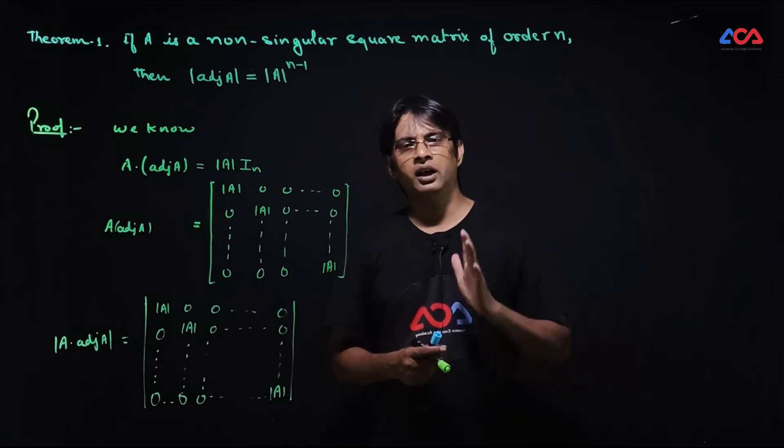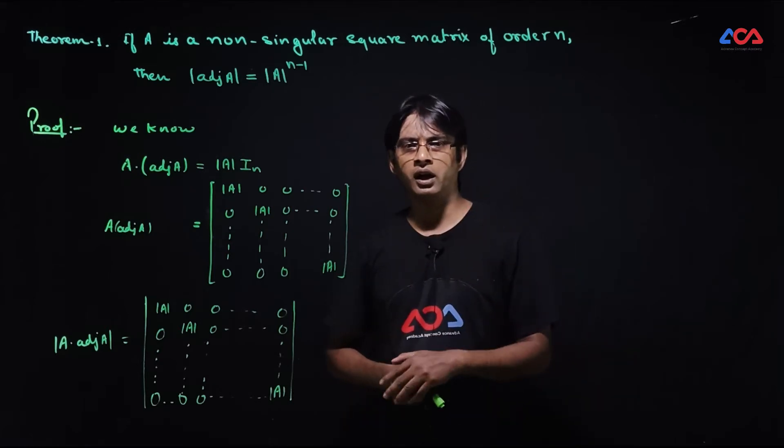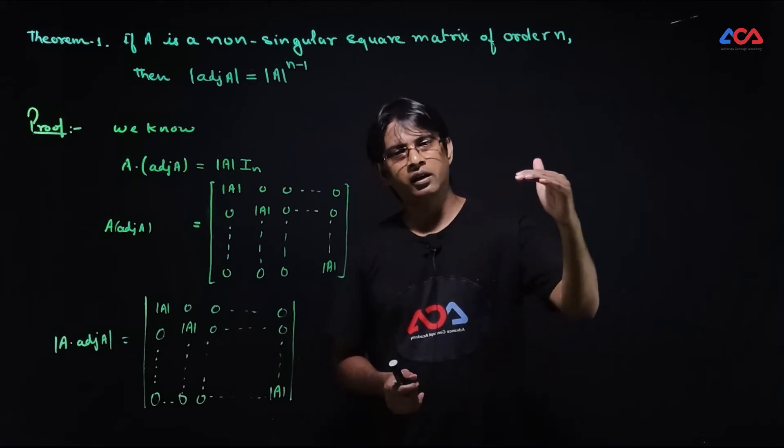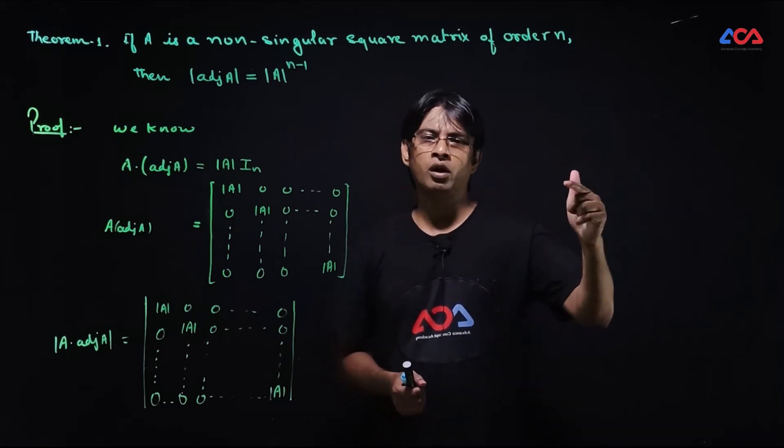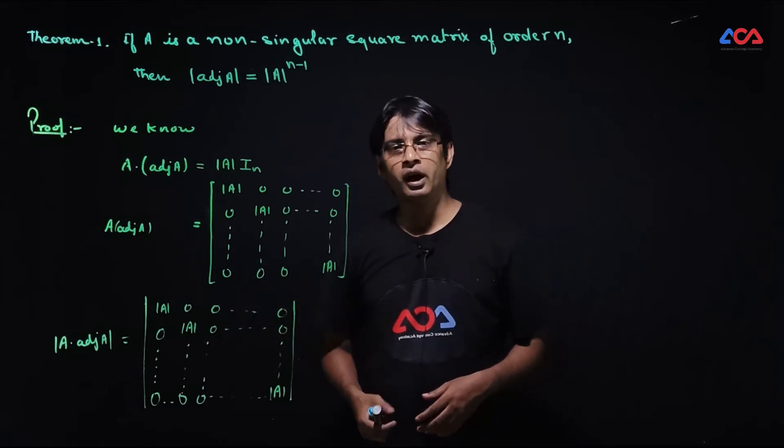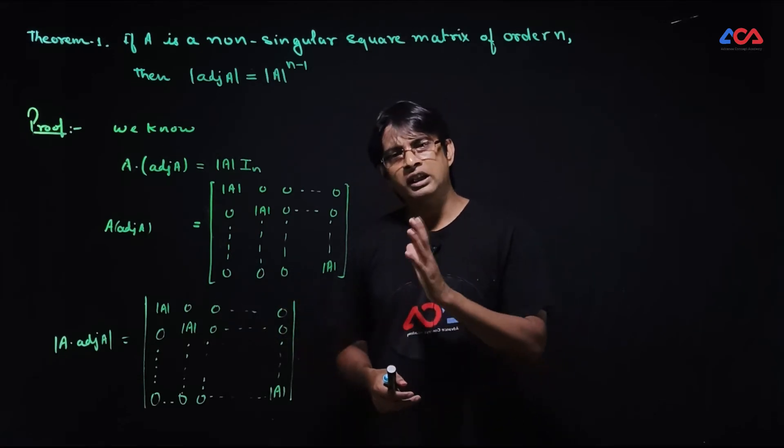By the property of the determinant, if an element is common, we can remove it from the row or the column. Then what will be the result?